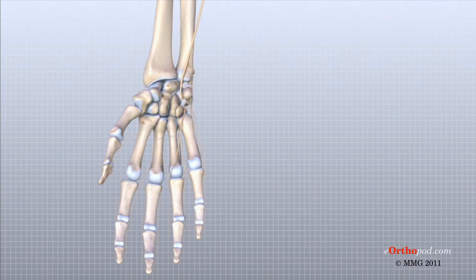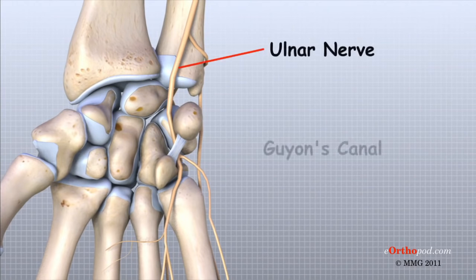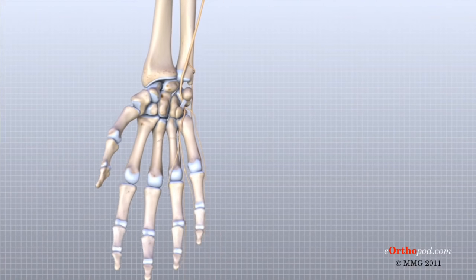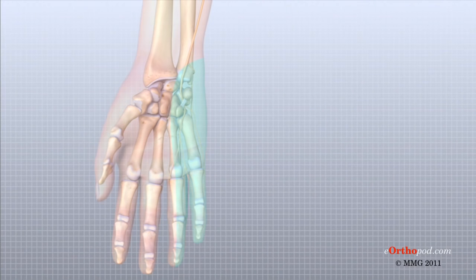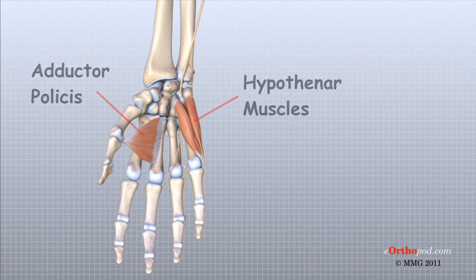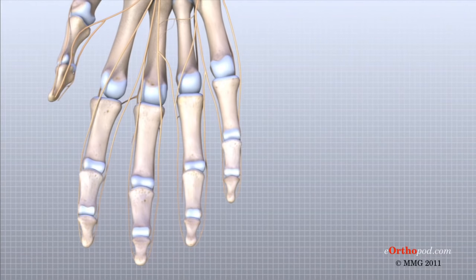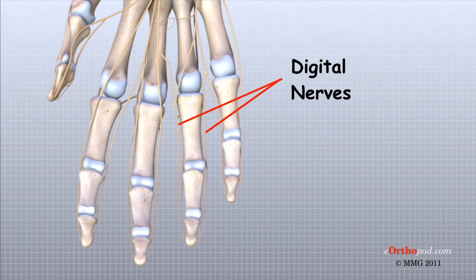The ulnar nerve travels through a separate tunnel called Guyon's Canal. This tunnel is formed by two carpal bones, the pisiform and hamate, and the ligament that connects them. After passing through the canal, the ulnar nerve branches out to supply feeling to the little finger and half the ring finger. Branches of this nerve also supply the small muscles in the palm and the muscle that pulls the thumb toward the palm. Each finger has a pair of sensory nerves, one on each side, that runs to the tip of the finger. These nerves are called the digital nerves and supply sensation to the fingers.